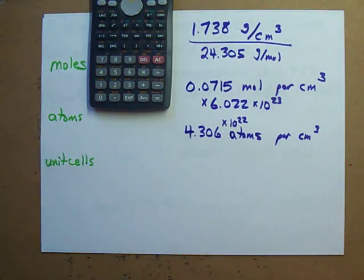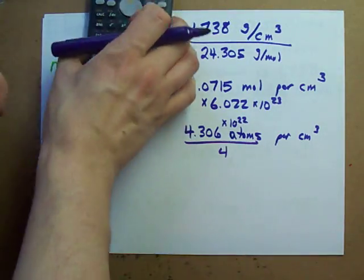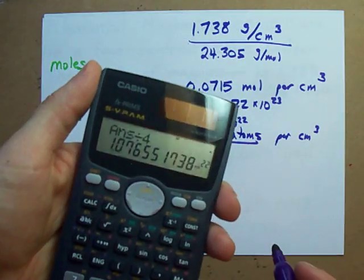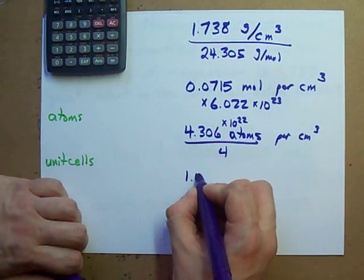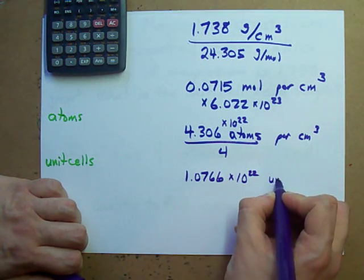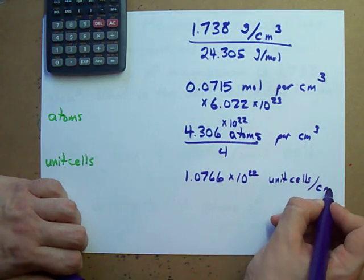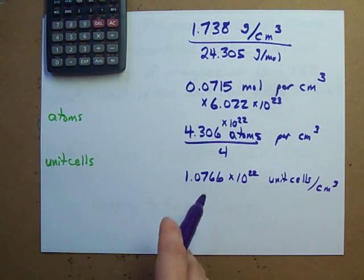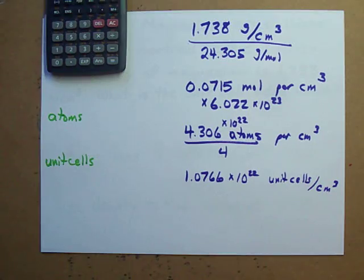Because there are 4 atoms in every unit cell, divide it by 4. I get 1.0766 times 10 to the power of 22 unit cells in every single centimeter cubed.